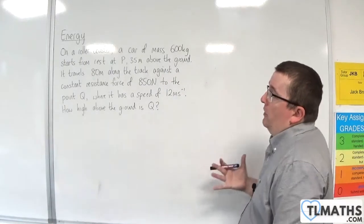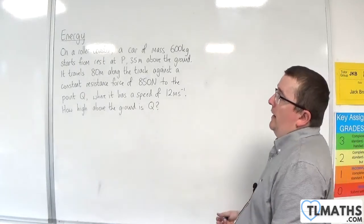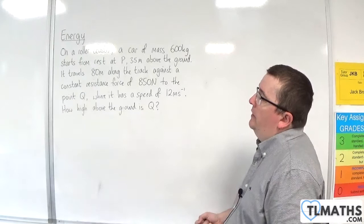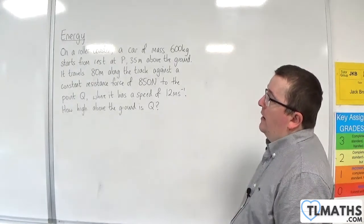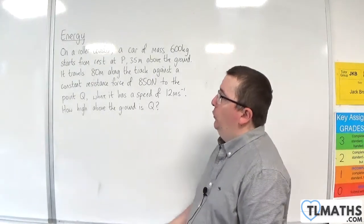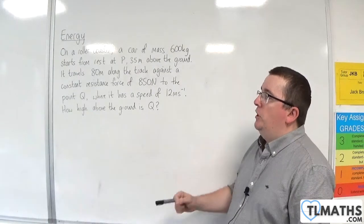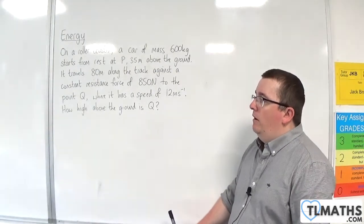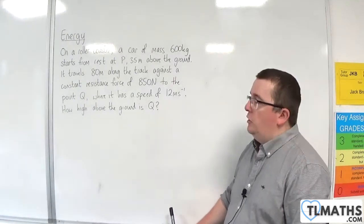Now, in this problem, we have a roller coaster where a car of mass 600 kilos starts from rest at P, 35 metres above the ground. It travels 80 metres along the track against a constant resistance force of 850 newtons to the point Q, where it has a speed of 12 metres per second. How high above the ground is Q?